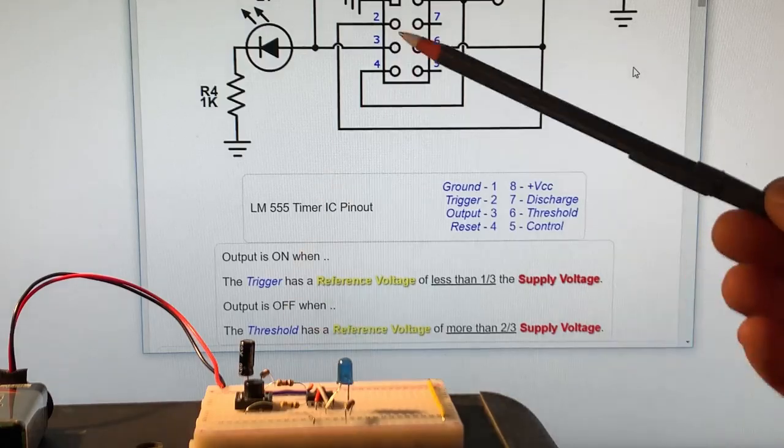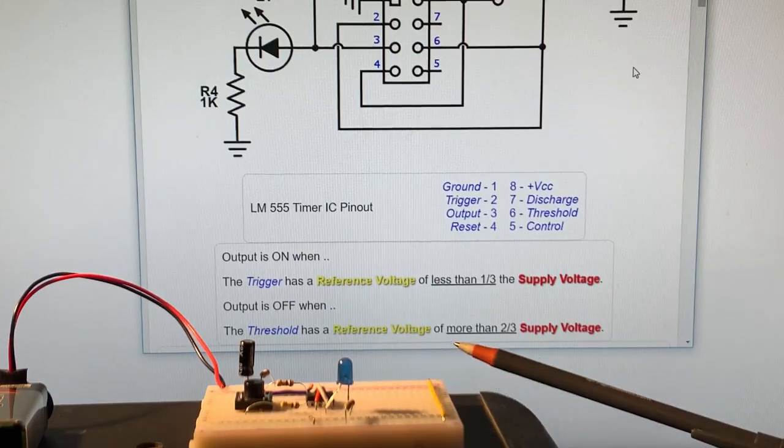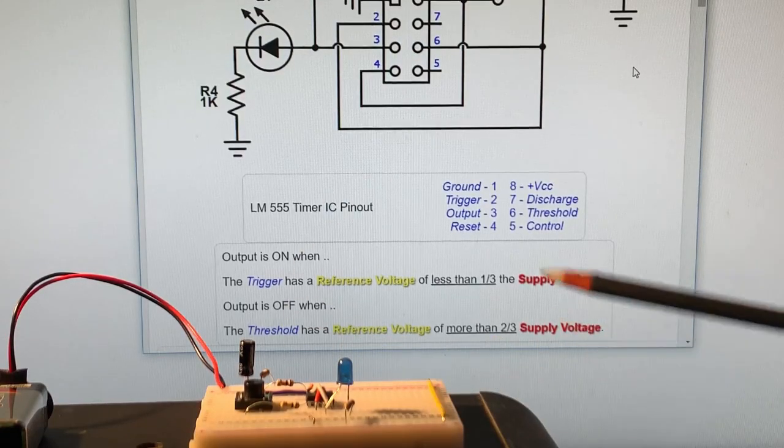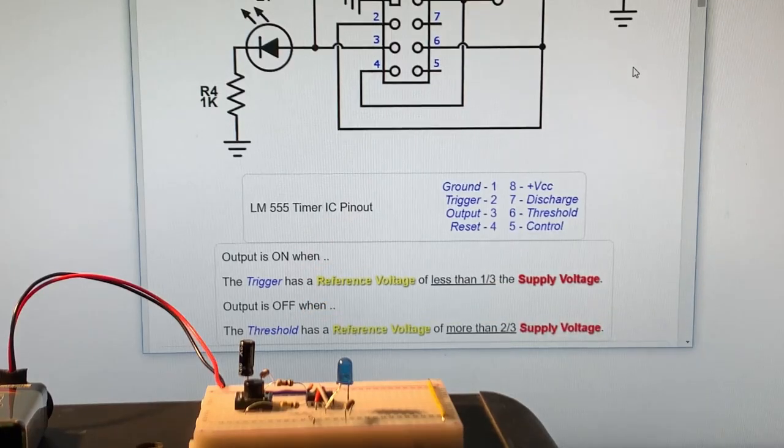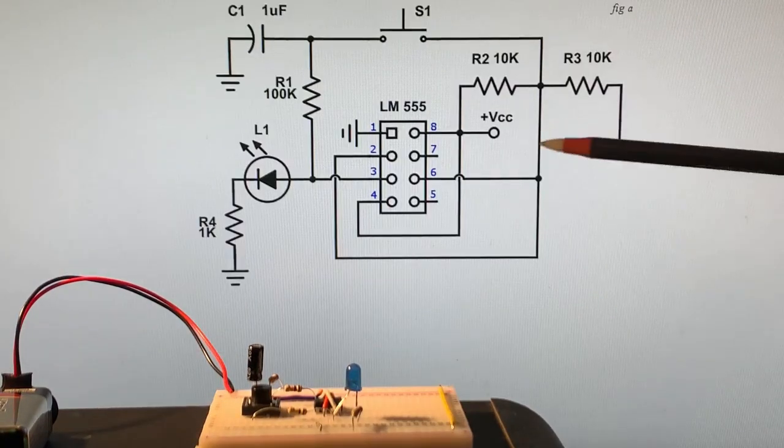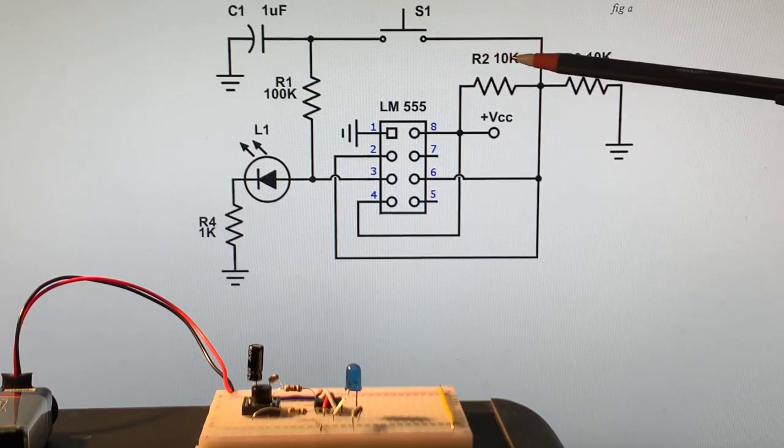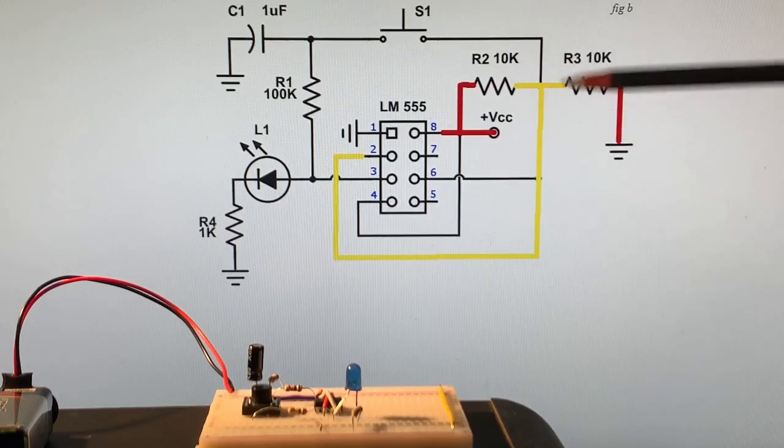When the threshold pin, pin six, has a reference voltage more than two thirds the supply voltage, output would be off. The way we do that is we supply a reference voltage. You can see that in yellow here.